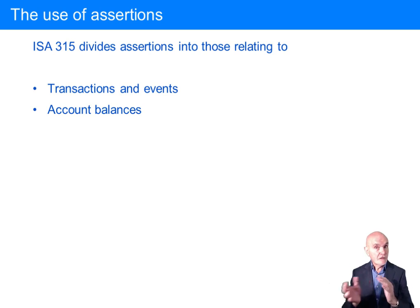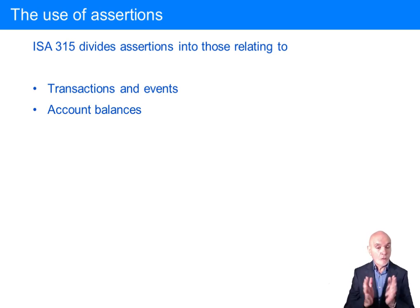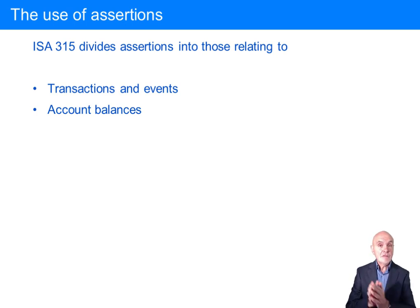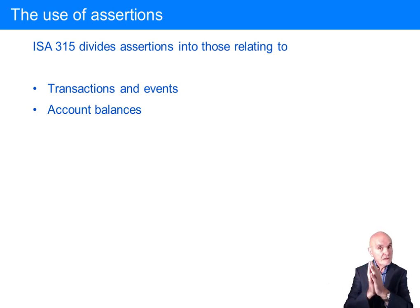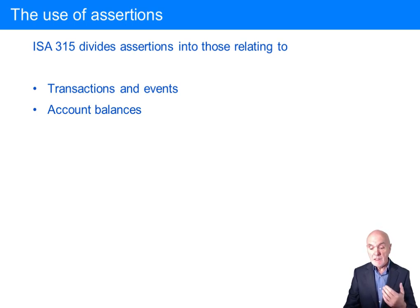So it's a two-way flow. You have to be able to say for a given assertion what evidence would support it. And if you're doing an audit test, particularly a substantive test, you have to say why you're doing it — what's the purpose of this test? What assertion is it helping us to get evidence about?